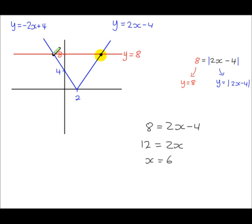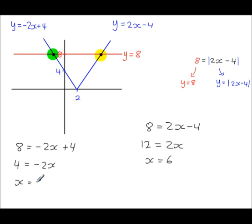For the other solution, the y-value there is 8, so 8 equals minus 2x plus 4. Subtracting 4 from each side and dividing by minus 2 gives x equals minus 2. So the x-coordinate of one intersection is 6 and the other is minus 2, and these are the two solutions to the equation involving the modulus function.